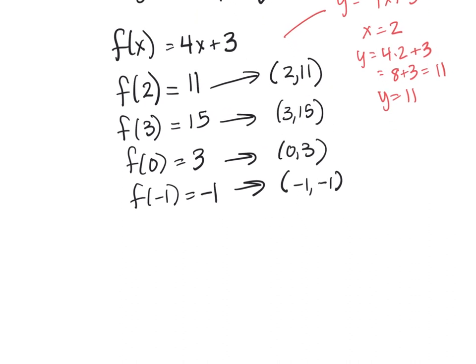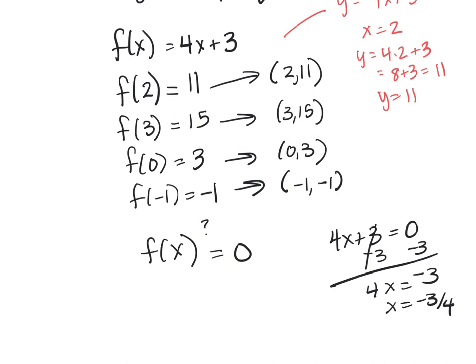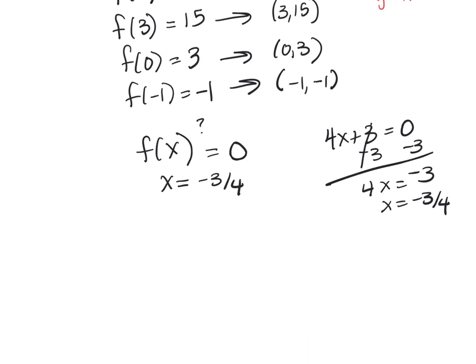I could ask myself when what x do I need to get 0 out. I can ask that question: 4x plus 3 equals 0 when x is equal to negative 3 fourths. So if I'm asking this question I can say f of negative three fourths equals 0.